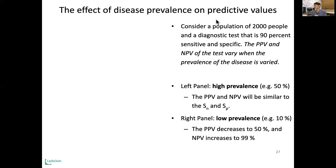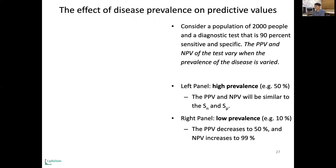The effect of disease prevalence on predictive values is best explained with an example. Let's say there is a village with a population of 2,000 people and a diagnostic test. Usually tests are pretty good, like 90% sensitive and 90% specific. In this case, the positive and negative predictive values will vary when the prevalence of the disease is varied.